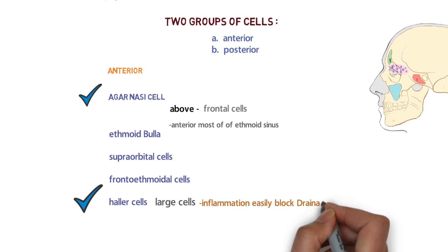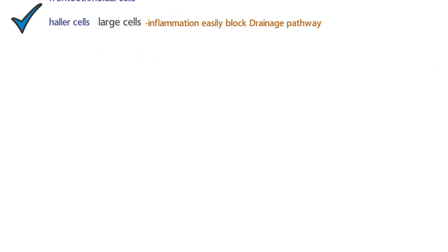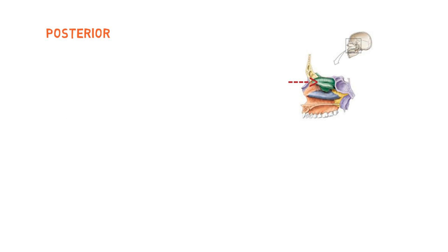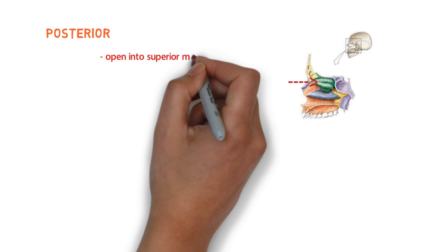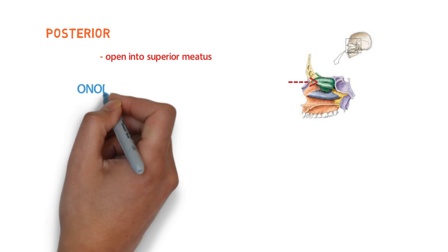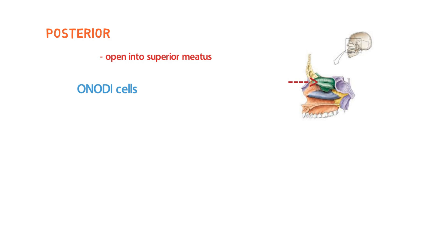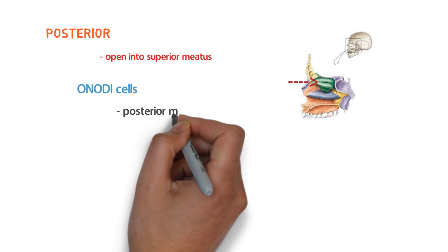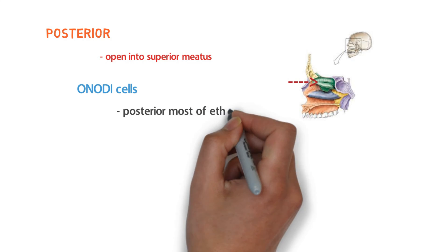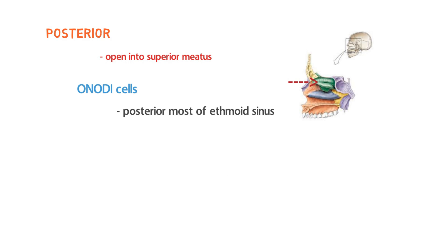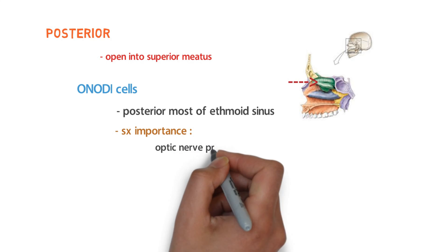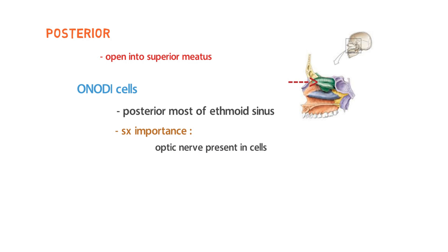The posterior ethmoid sinus opens into the superior meatus. It contains very important cells called Onodi cells, which are the posterior-most cells of the ethmoid sinus. The importance of the posterior ethmoid sinus is that within these cells there may be chances of the presence of the optic nerve.